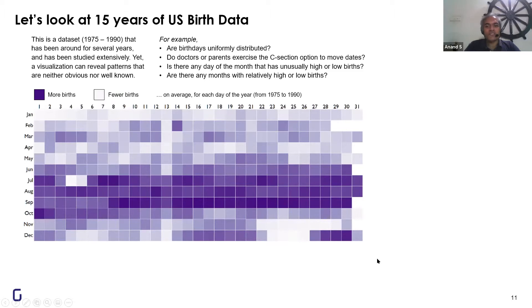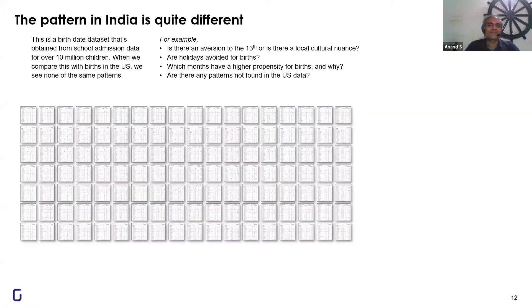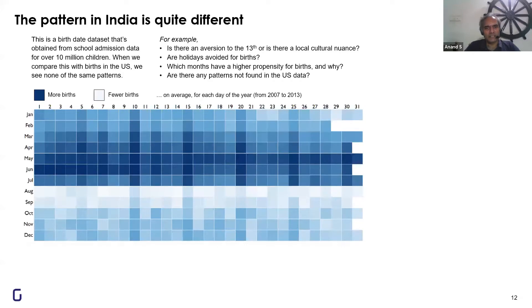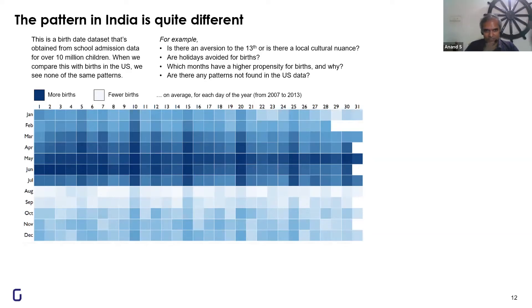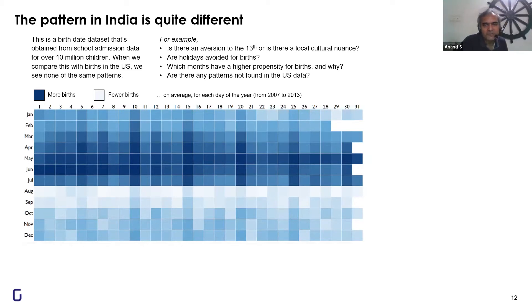If the US can be this superstitious, what's India like? The pattern in India shows no births after August, which is bizarre — but that mystery disappears when you realize this is the same data used a few slides ago for schools. This is essentially birth dates based on school admission records.